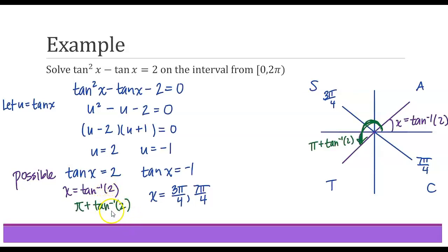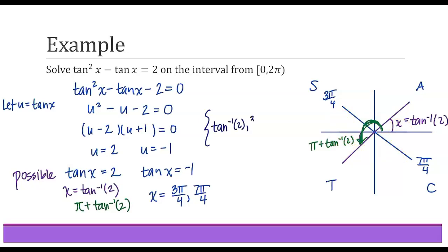So all four answers in set notation from least to greatest are: tangent inverse of 2, then 3 pi over 4, then pi plus tangent inverse of 2, and finally 7 pi over 4.